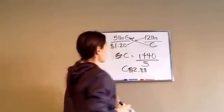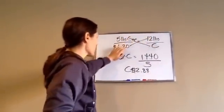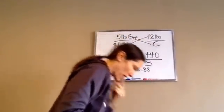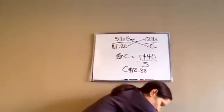And so I'm going to divide by 5. And C equals 288. So $2.88 for 12 pounds, $1.20 for 5 pounds.